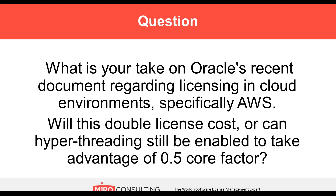For Enterprise Edition again, for the calculation against Enterprise Edition on an Oracle cloud, they actually embedded — even though they don't call it a core factor — they embedded the use of the core factor into the calculation that you would use against licensing applied to the Oracle cloud. This comes into play for any licenses you're taking from your on-premise perpetual assets and applying them against use in one of these cloud environments. So essentially it will double the cost. And the hyper-threading is kind of a separate issue.